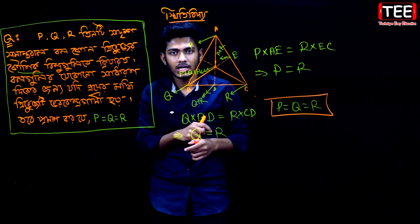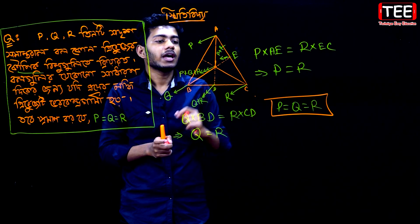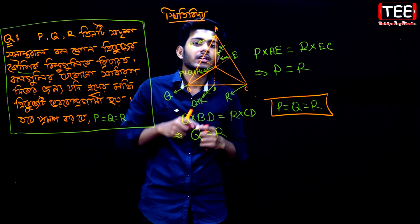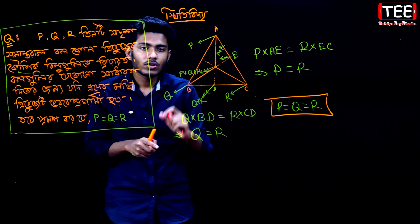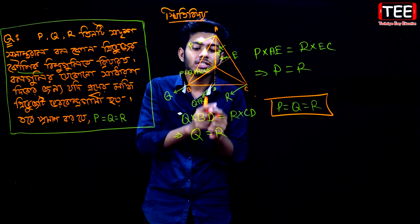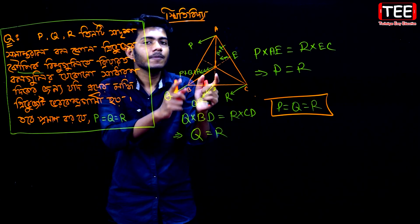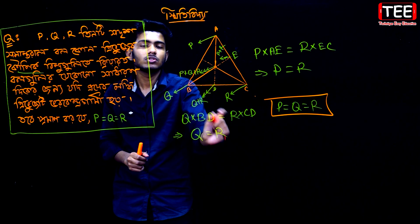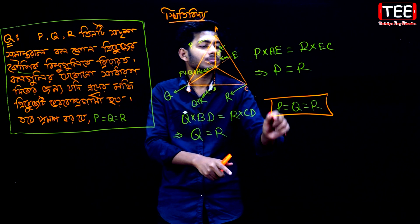So we will know. We have to write Q into BD is equal to R into CD. And BD is equal to CD. We have to write BD is equal to CD, so BD is equal to CD. So we have to write P is equal to R. So P is equal to Q is equal to R.